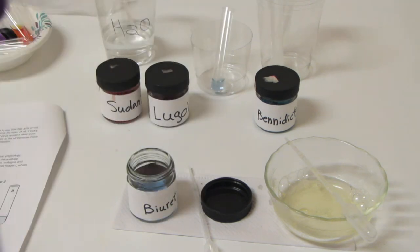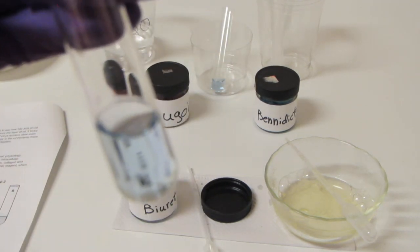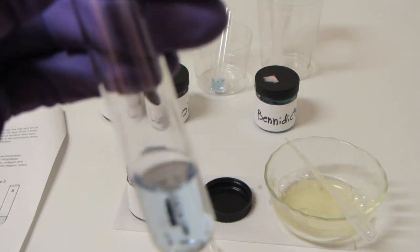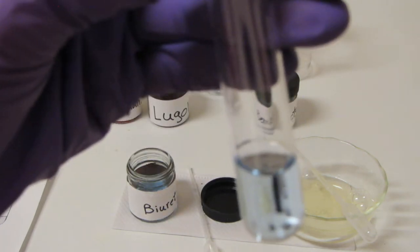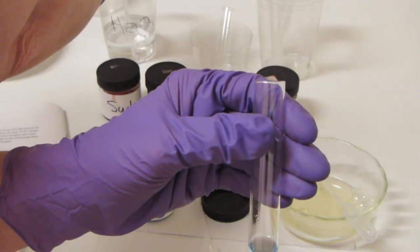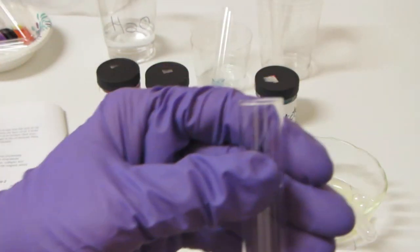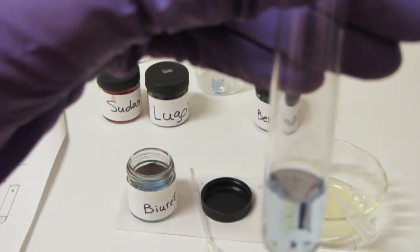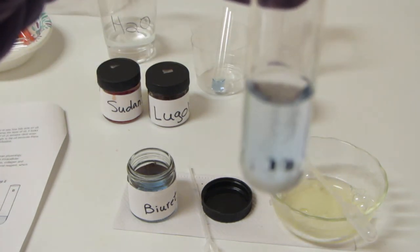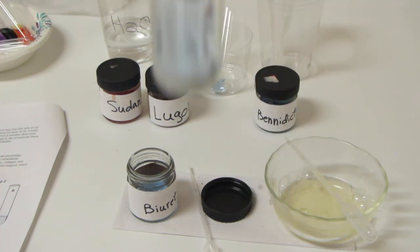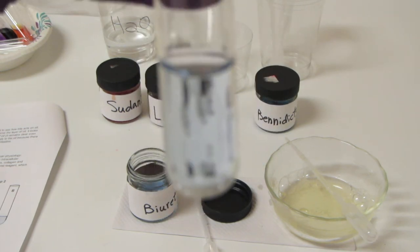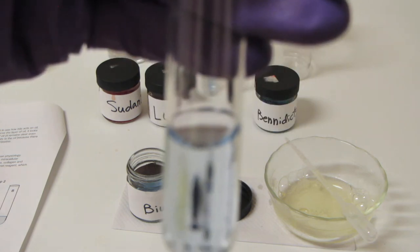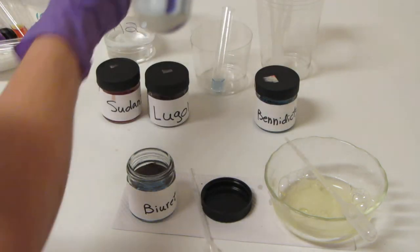So what we're going to do is mix one tube with water as our control and one tube with a protein source and see what happens. First we're going to take some water from my little container and put some water in here. Mix it up a little bit and you can see that there's really not much happening, right? Maybe it looks a little lighter shade of blue because we diluted it out with water.